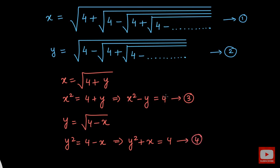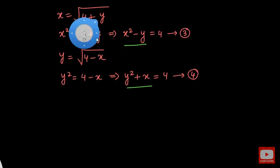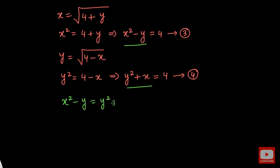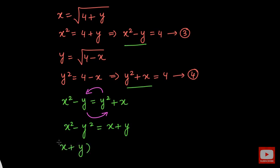We now have a system of two equations and our goal is to find the value of x. In equation number 3, x squared minus y equals 4. In equation number 4, y squared plus x equals 4. Since x squared minus y and y squared plus x are both equal to 4, they are equal to each other. So we set them equal: x squared minus y equals y squared plus x. Bringing y squared to the left and minus y to the right: x squared minus y squared equals x plus y. Using the algebraic identity, x squared minus y squared equals (x plus y)(x minus y), so (x + y)(x − y) = x + y.